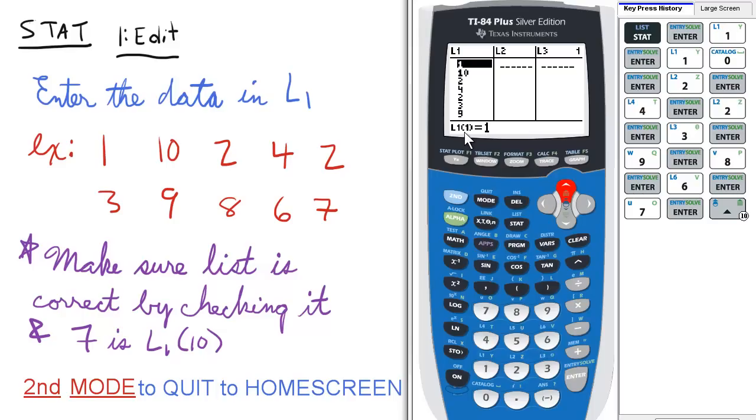So L1 is 1. L1 means list 1, and 1 means the first element, and that element's value is 1. So 1, 10, 2, 4, 2, 3, 9, 8, 6, 7.